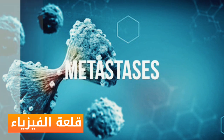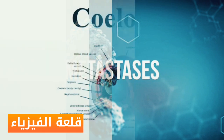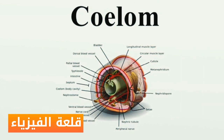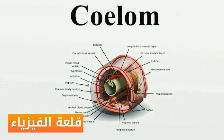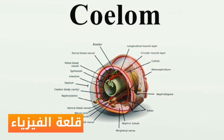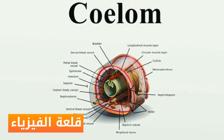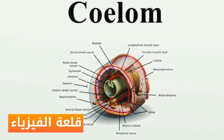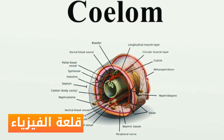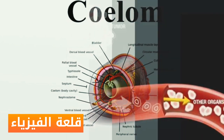As cells proliferate, research has shown that there are three common routes of metastasis. Number one: coelomic spread. In this route, cancerous cells penetrate the covering surface of cavities in our body, resulting in malignant metastasis in different organs.